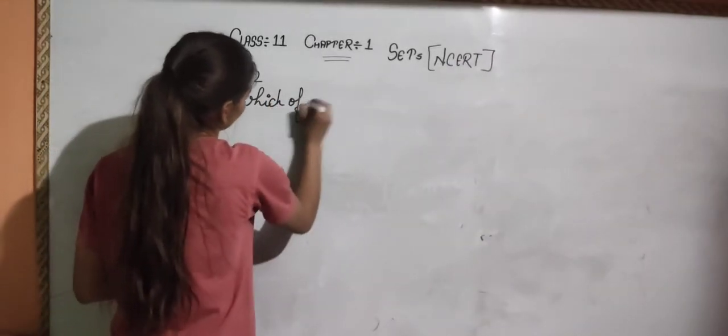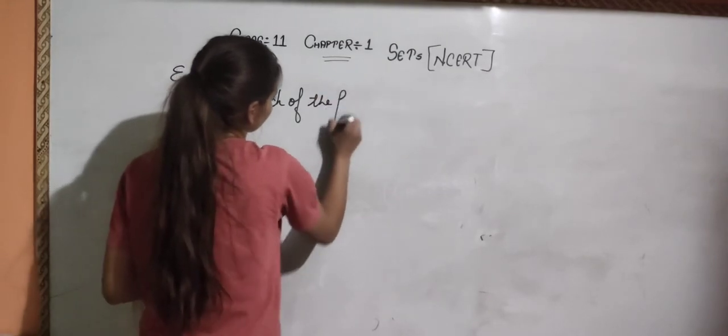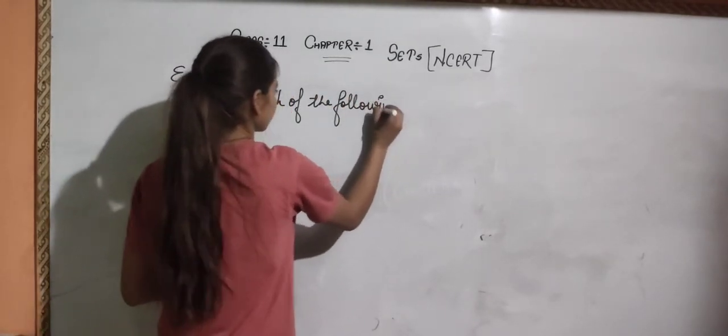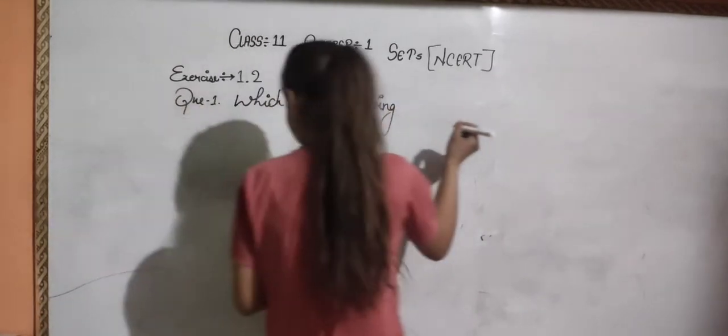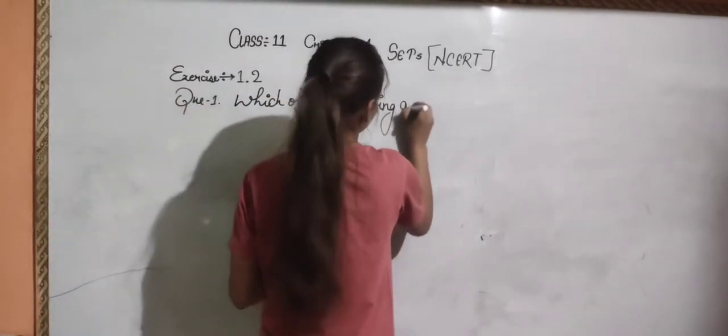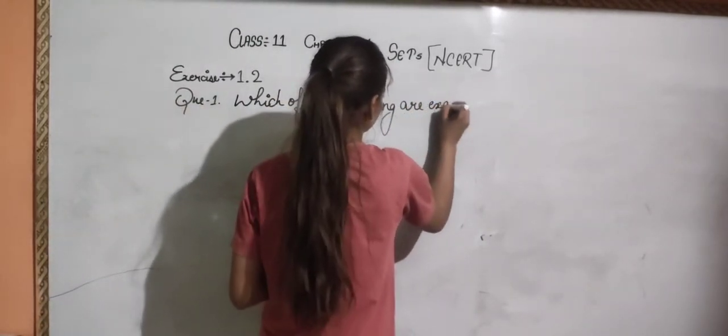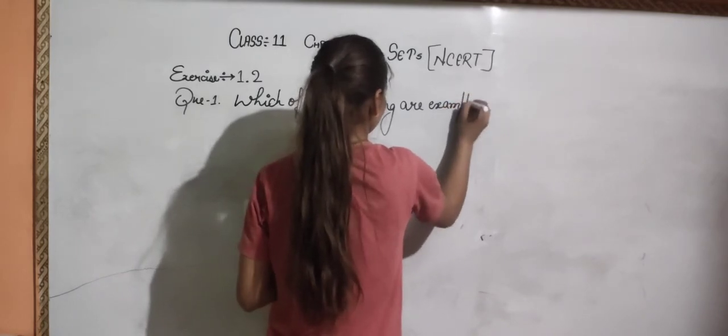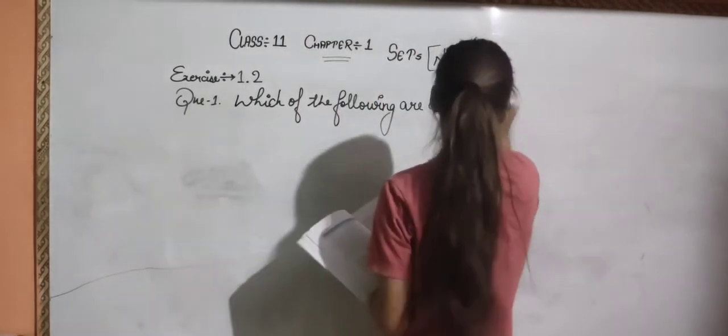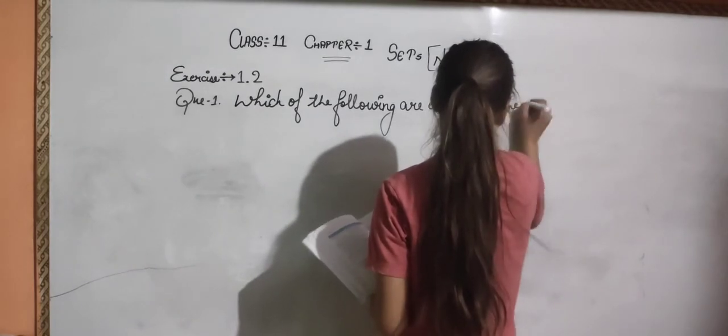Which of the following are examples of the null set?